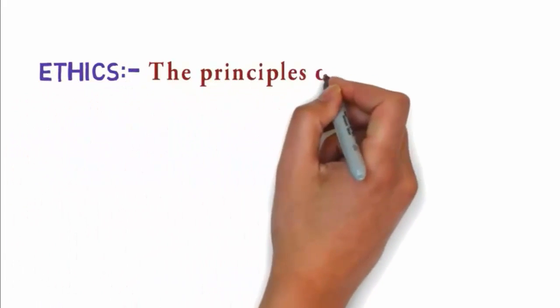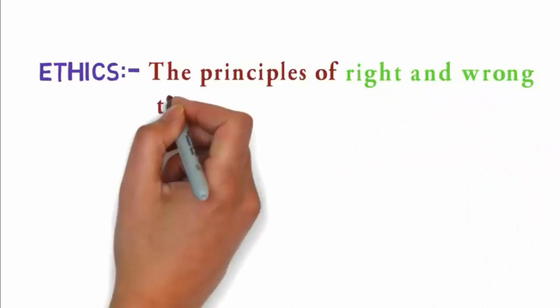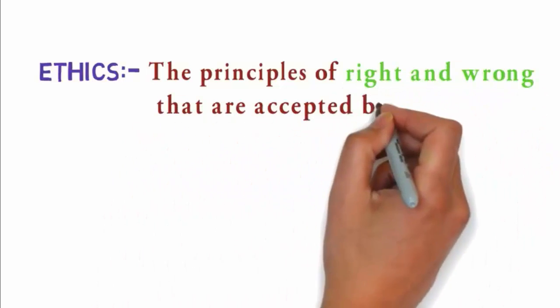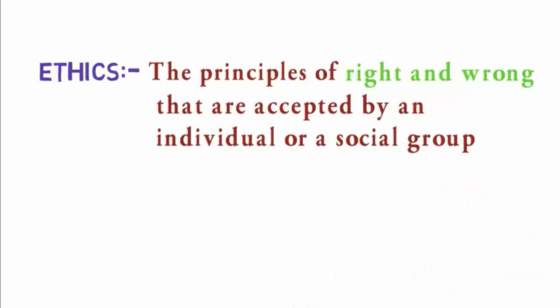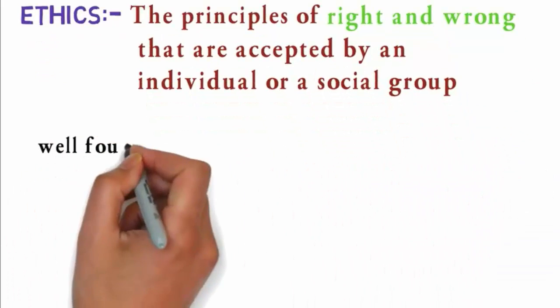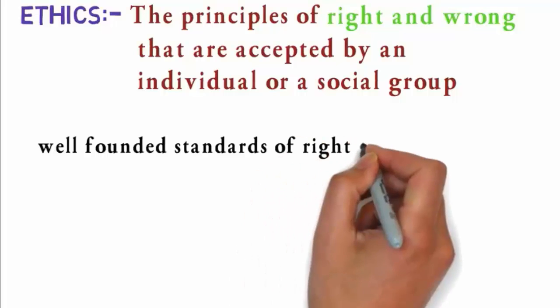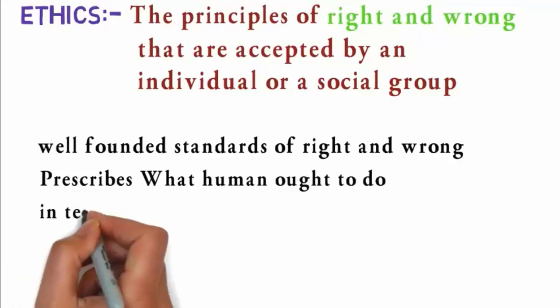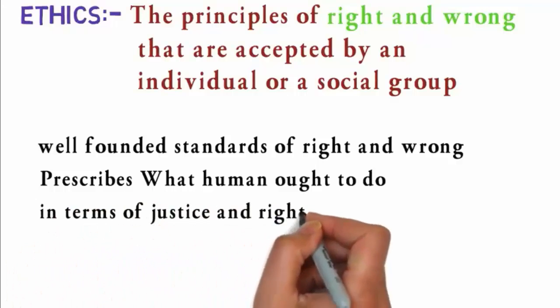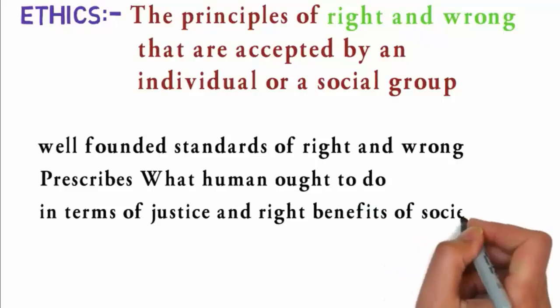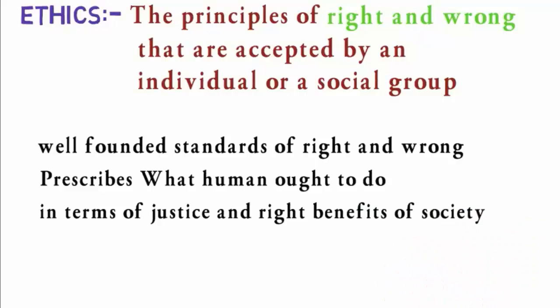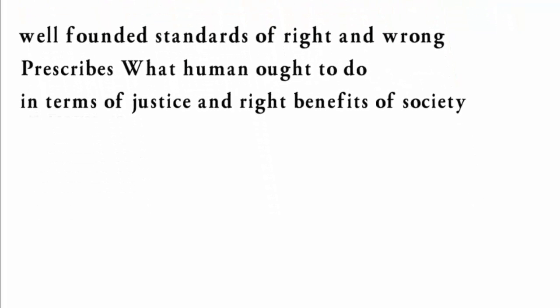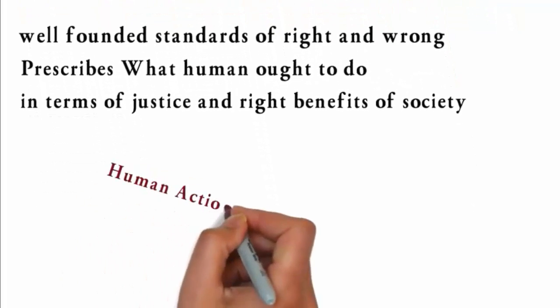What is ethics? Ethics is nothing but the principles of right and wrong that are accepted by an individual or a social group. Ethics refers to well-founded standards of right and wrong and prescribes what humans ought to do in terms of justice, rights, and benefits of society.